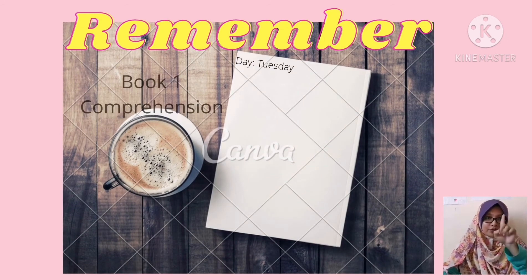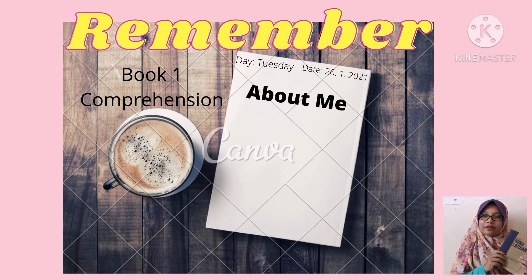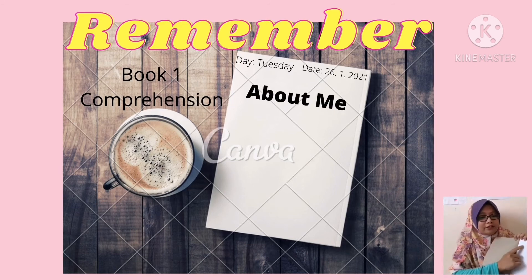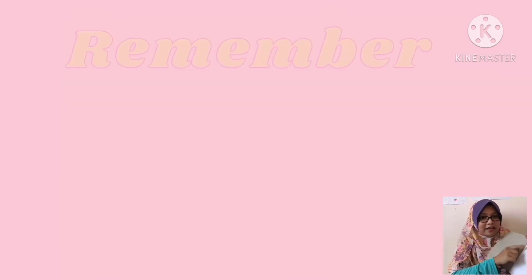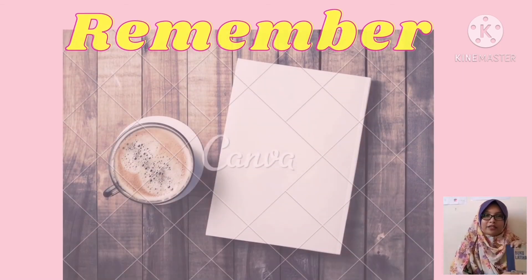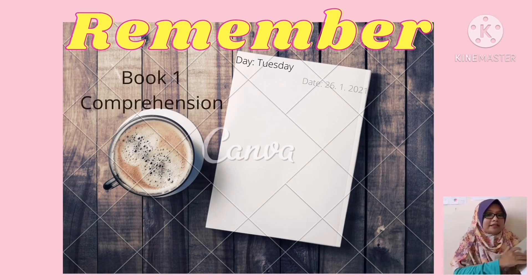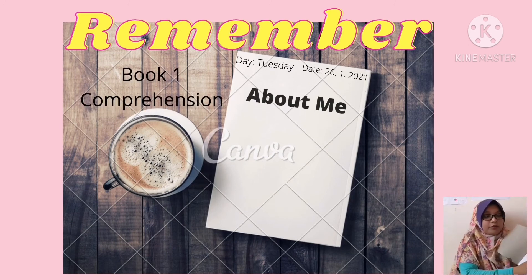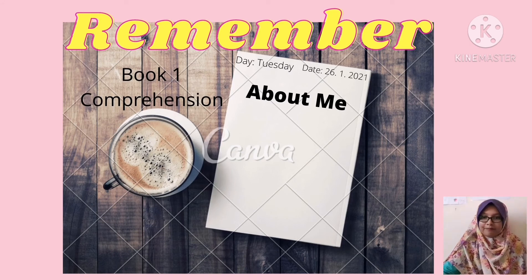Remember, use your Book One — comprehension Book One. You are going to write in the first page. Don't forget to write the day: today's English lesson is on Tuesday and the date is 26 January 2021. Write the day and date on top of your first page, and write 'About Me' — which means about yourself.